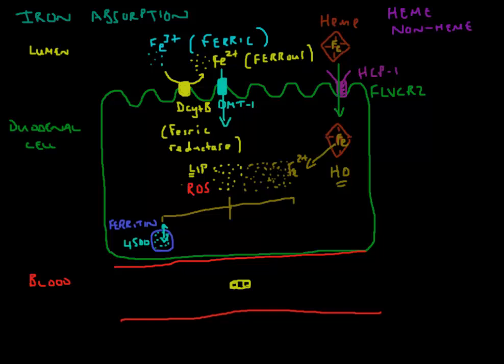The second thing that can happen is that the cell can use the iron for its own needs. Let's say this is a mitochondrion, which is the energy production area of the cell. There's also a whole lot of enzymes in here, and this is also where heme synthesis takes place. The iron can go to the mitochondria and be utilized to make enzymes and to make heme. We've now got storage iron. We've got utilization.